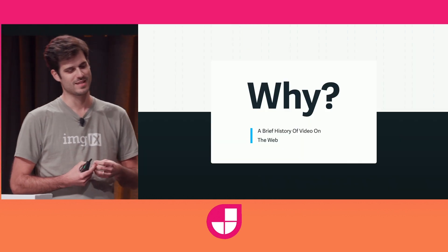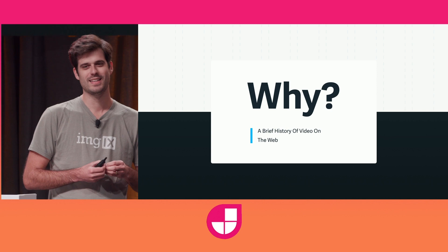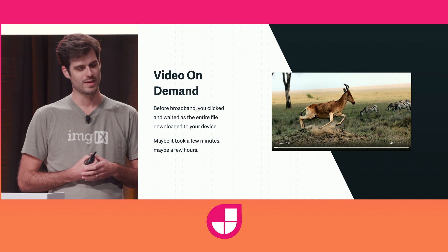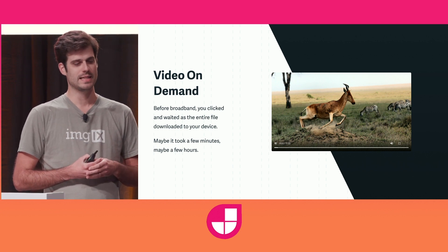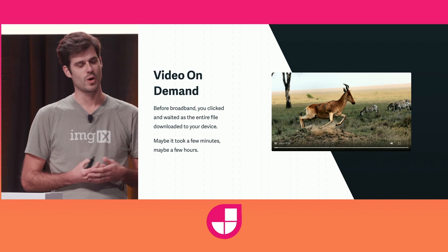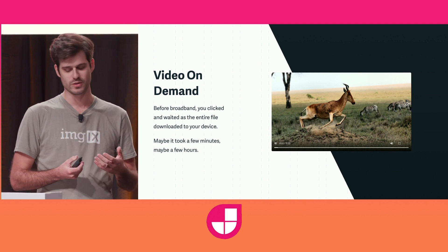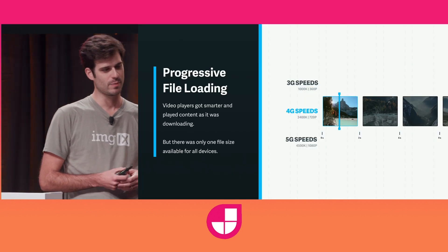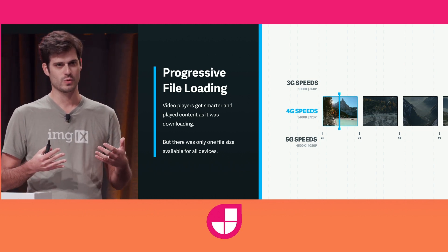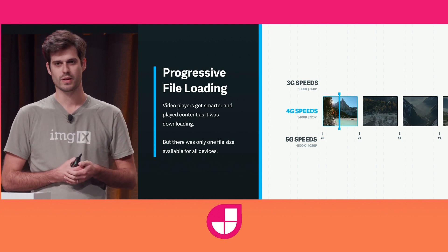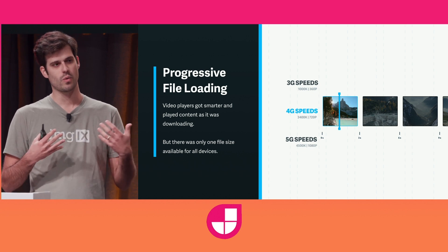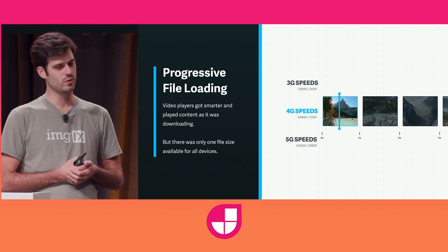Let's talk a little bit about the history of streaming video on the web. How did things start out? We started with video on demand. Video on demand basically worked by having you click play and wait — maybe a few minutes or a few hours — until your whole video file was there and you could watch it. This wasn't ideal, so the industry innovated and came up with file streaming, or progressive file loading. The way this works is you'd typically have one resolution for all the types of devices you wanted to display your video on, and as the file was being loaded, you could watch chunks of the video.